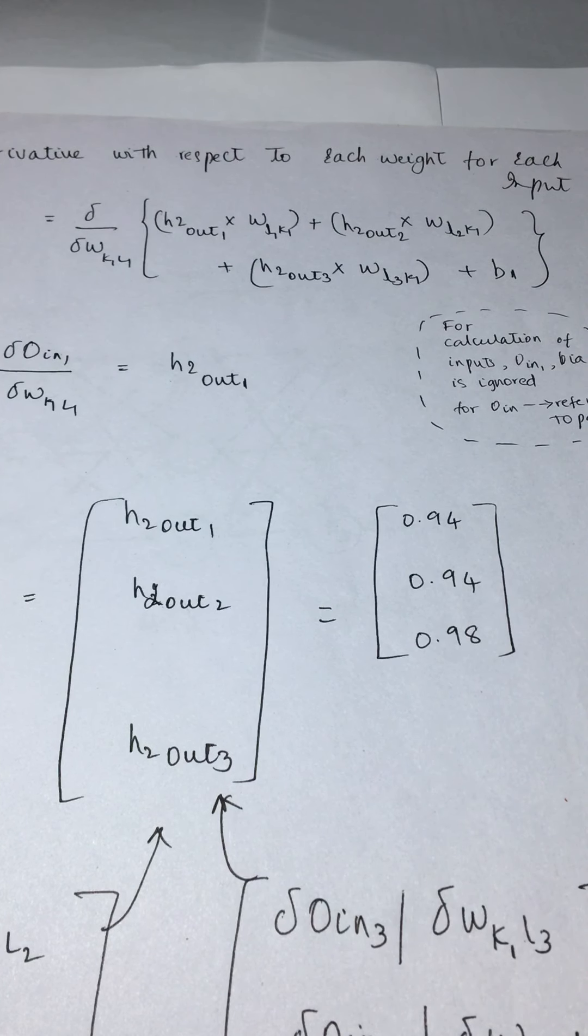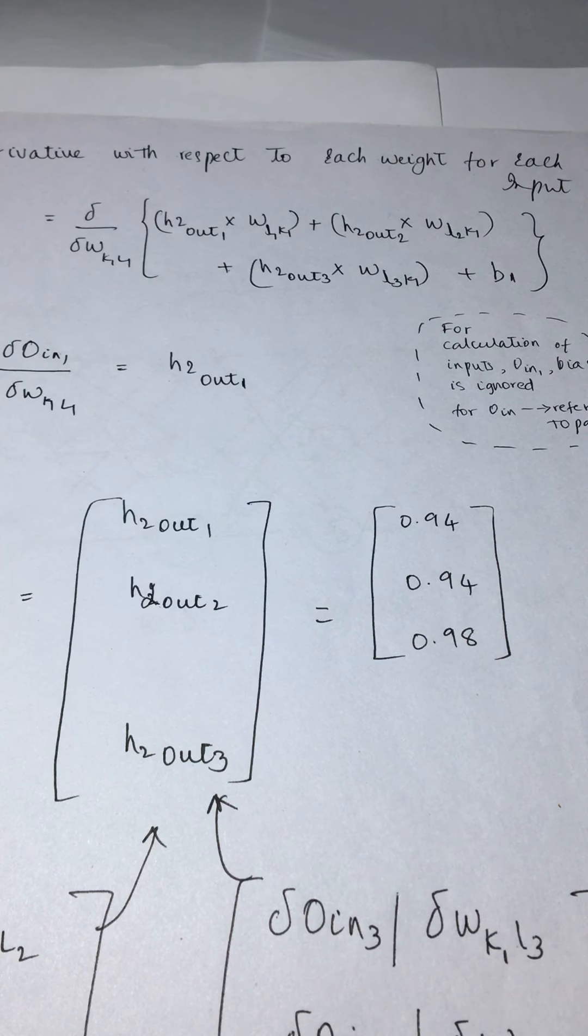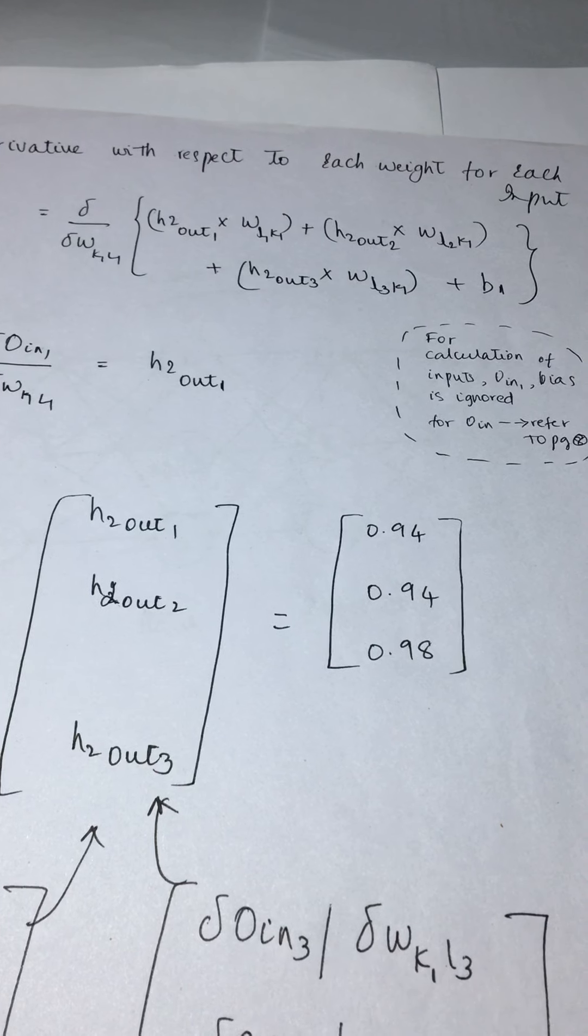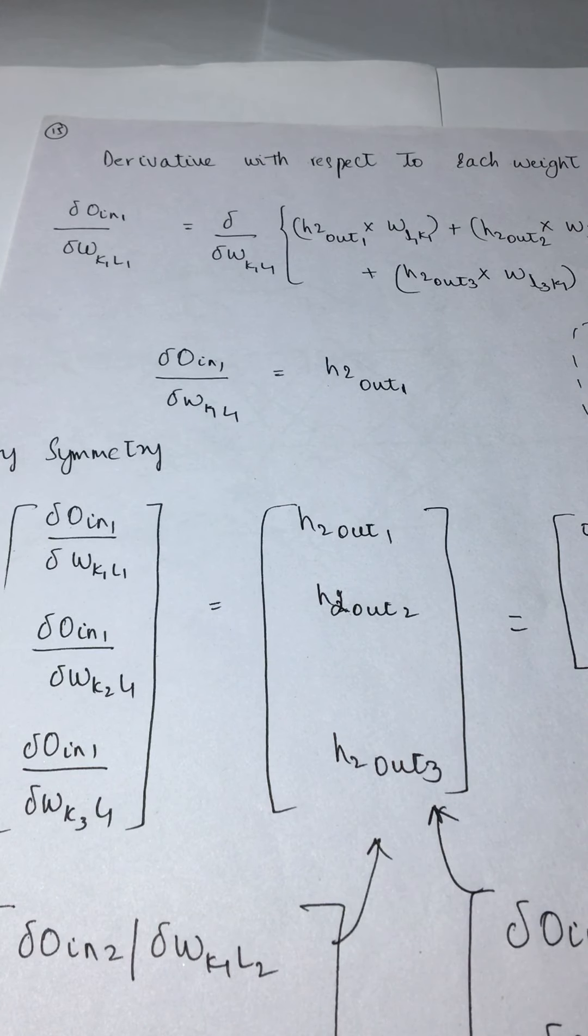Similarly, we would calculate the derivative with respect to weights for each of these. One thing you'll notice is the bias term is ignored since bias is a constant, and the derivative of a constant is zero everywhere.